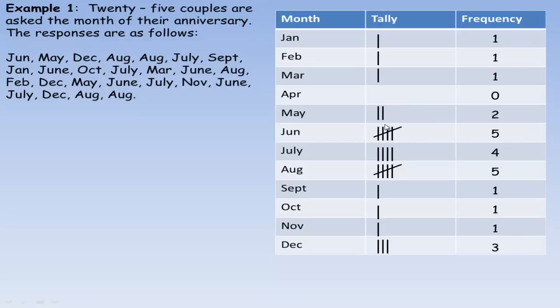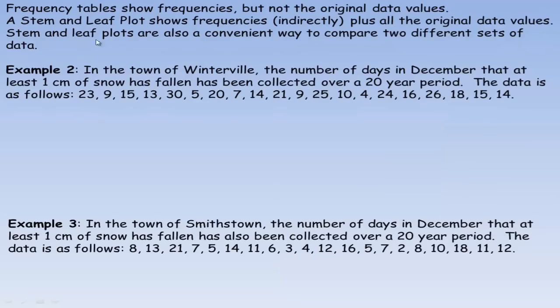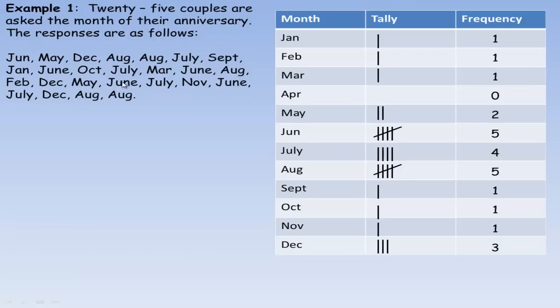We're going to graph this in a later example. The thing about frequency tables is they show the frequencies, but not the original data values. If you didn't have the raw data, if you just had the frequency table, you don't see the original data points, especially if they're numerical.